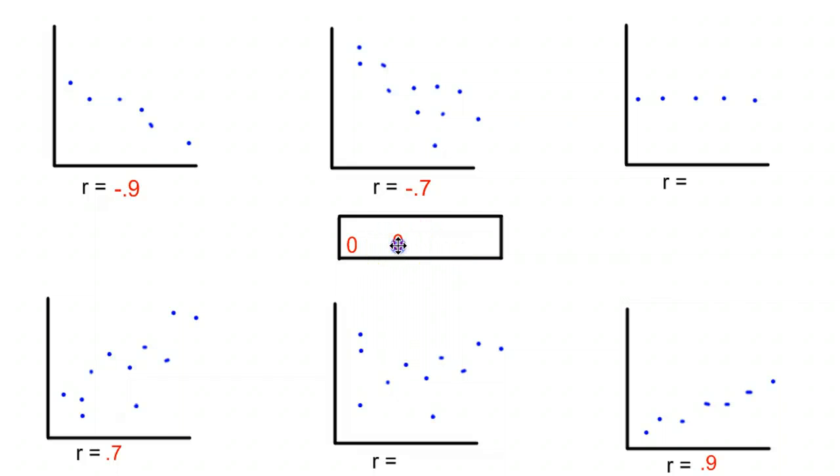That leaves us with a couple zeros. This one here, there's really not much going on for a pattern. So that one's pretty easy to convince us that r is 0.